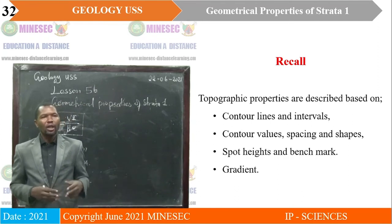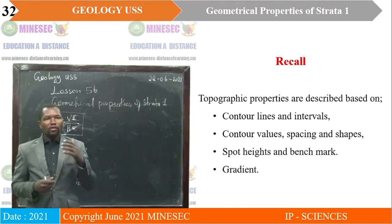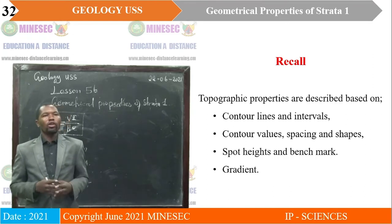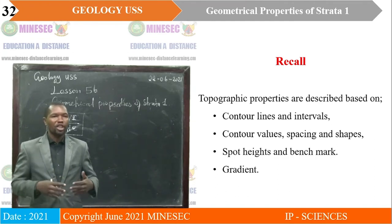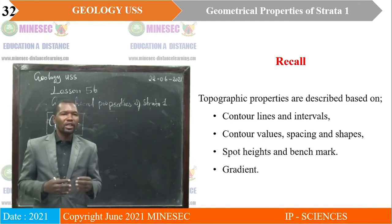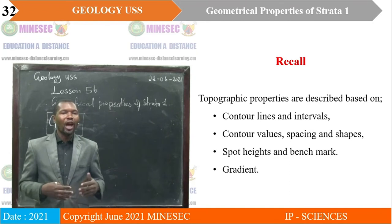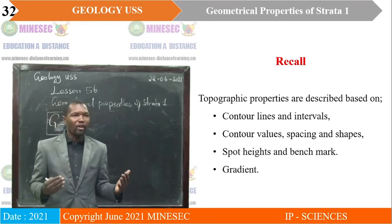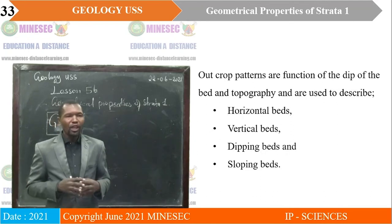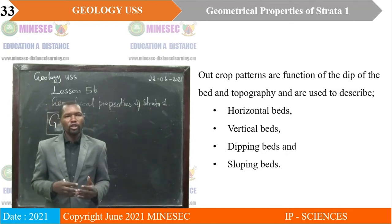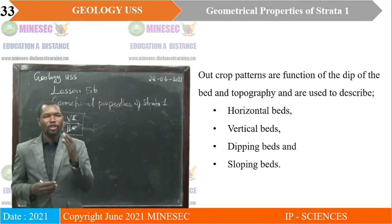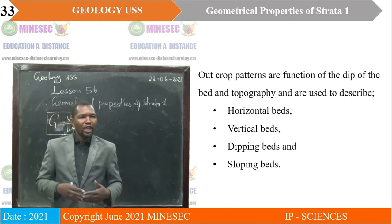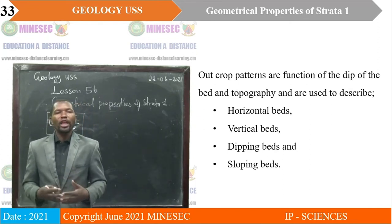Recall that topographic properties are described based on contour lines and contour intervals, contour values, the spacing of contours, and the shapes of the contours. They are also interpreted using spot heights, benchmarks, and gradients. Outcrop patterns are functions of the dip of the bed and topography, and are used to describe horizontal beds, vertical beds, dipping beds, and sloping beds.